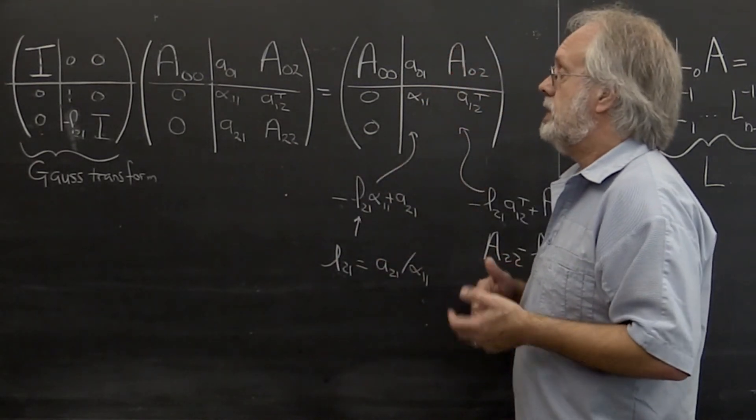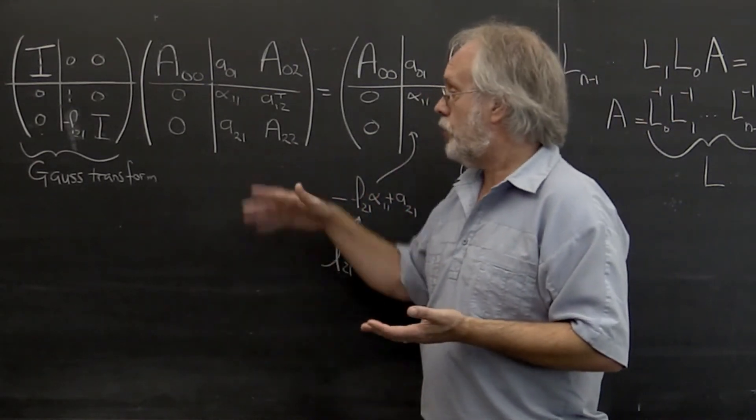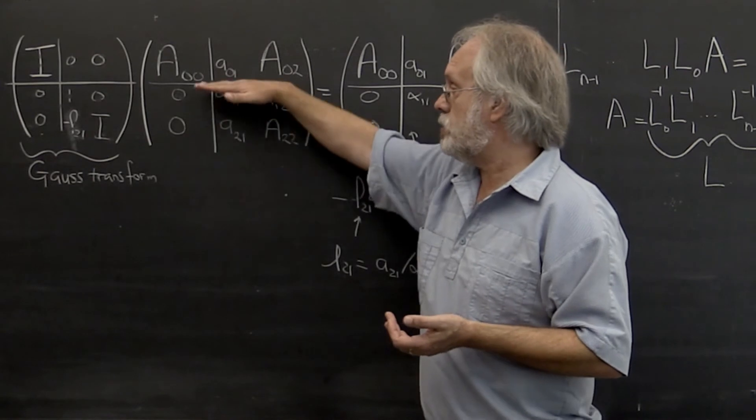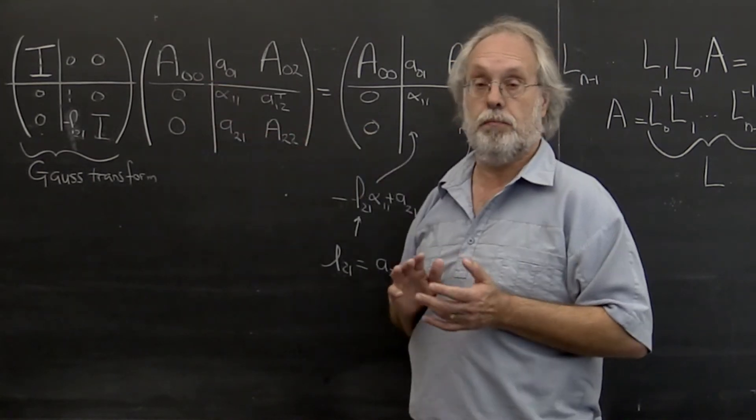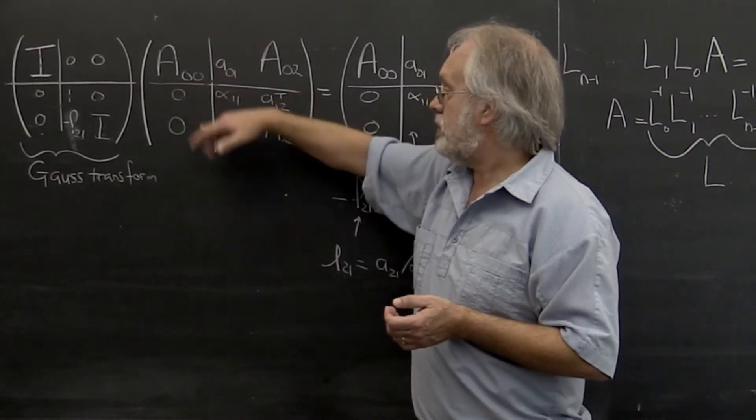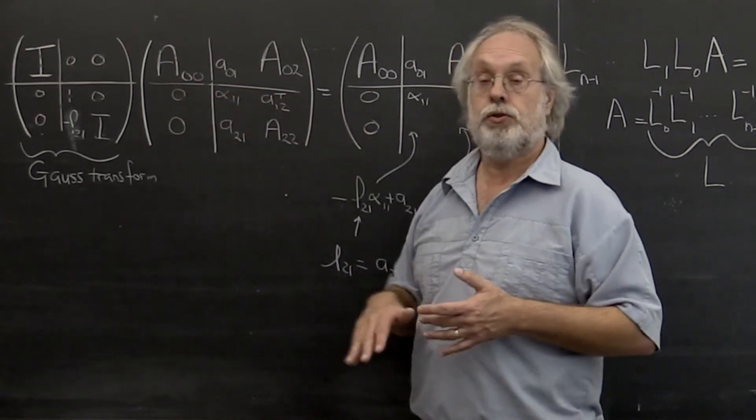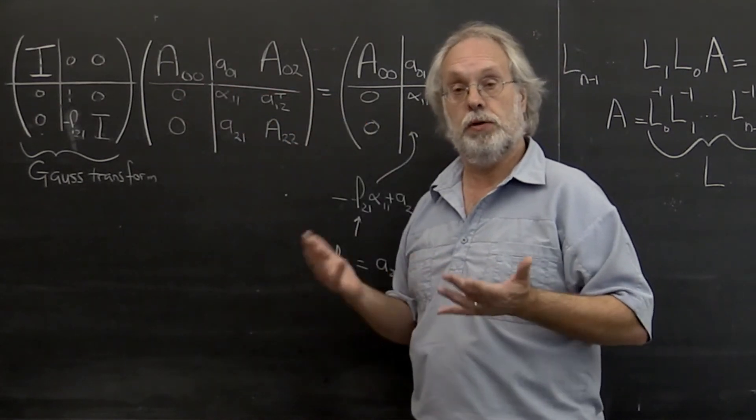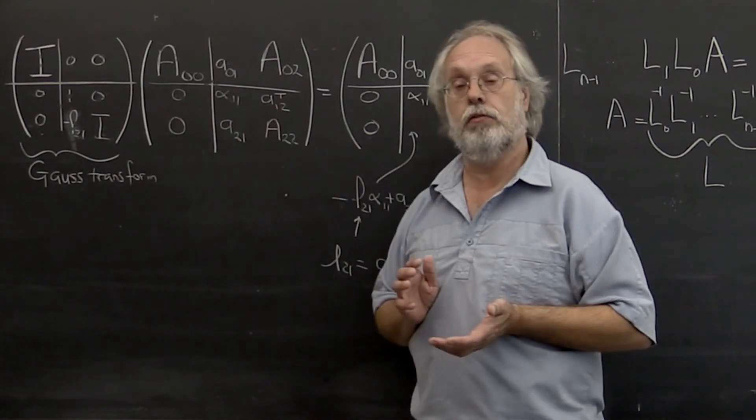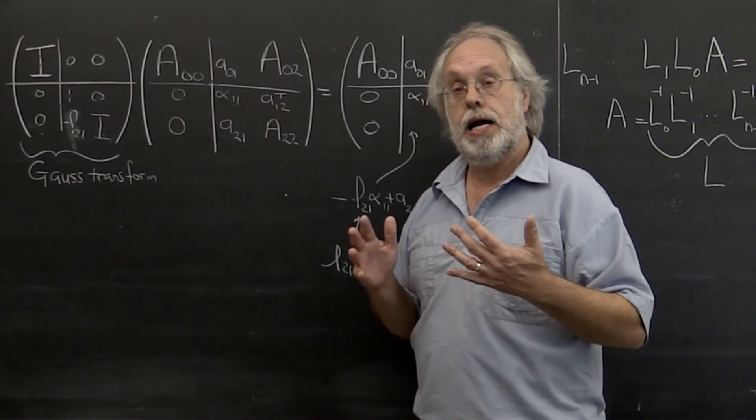However, it is the case that you could go ahead and swap two rows at this particular point, bring a row that actually has a non-zero into the current row that you're going to be working with, the one that contains alpha 1 1, and then proceed.